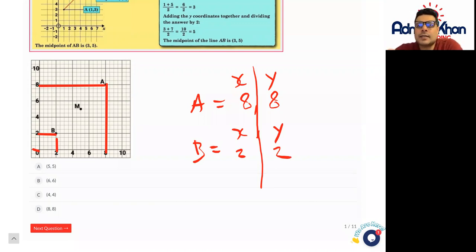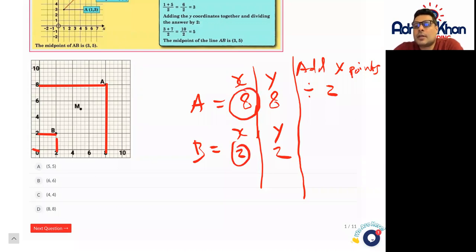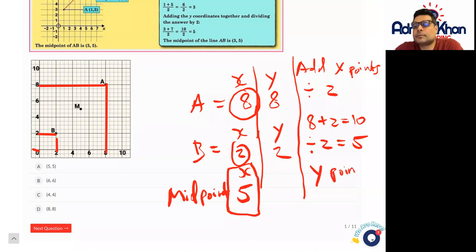What we're going to do is add the x points and divide by 2. The x-axis coordinates are 8 and 2. So 8 add 2 equals 10, and 10 divided by 2 equals 5. We're going to do exactly the same thing for the y points. 8 add 2 is 10, 10 divided by 2 is 5.